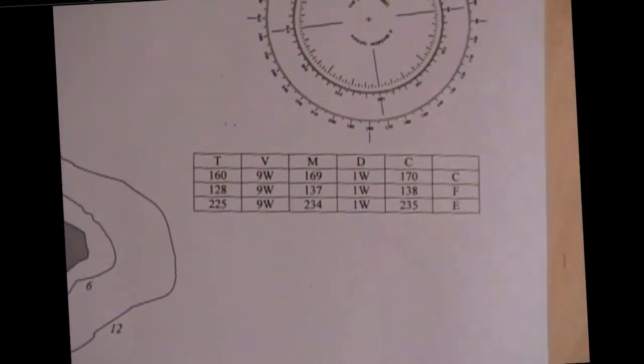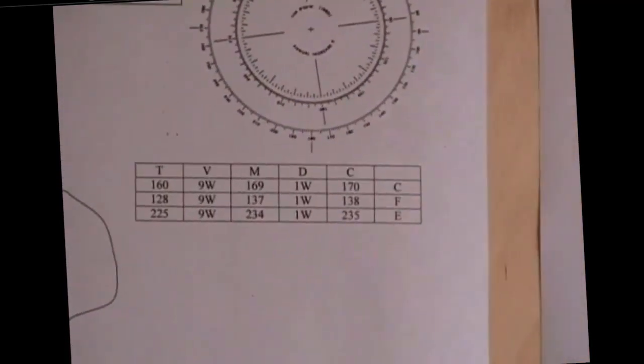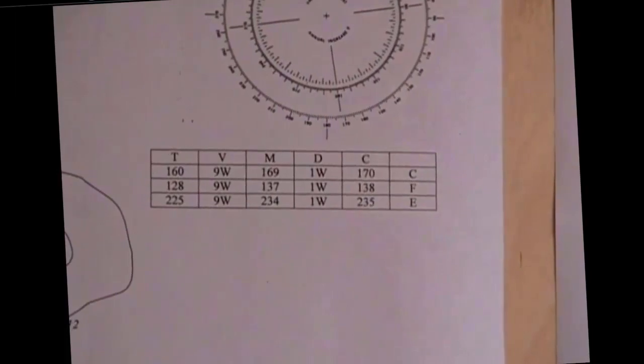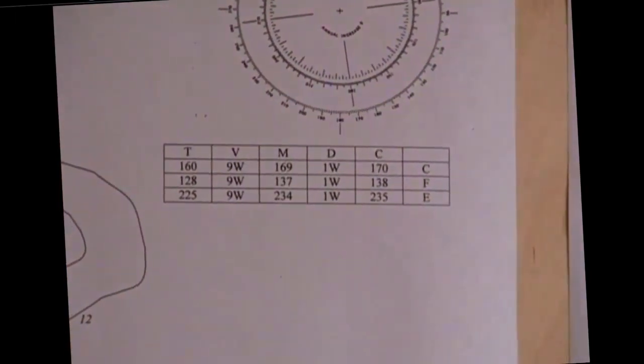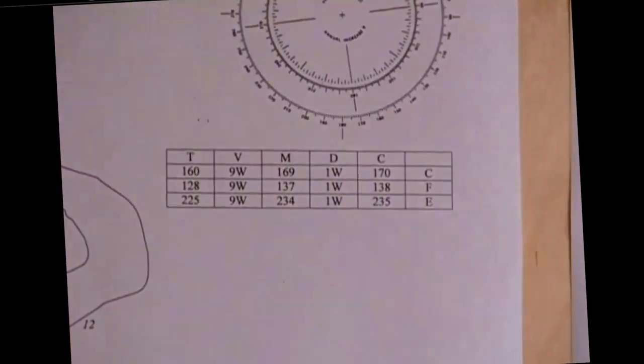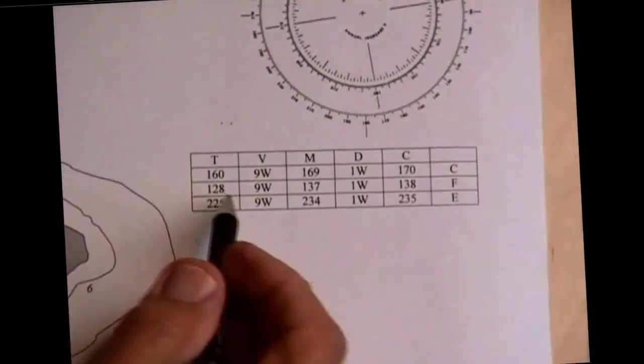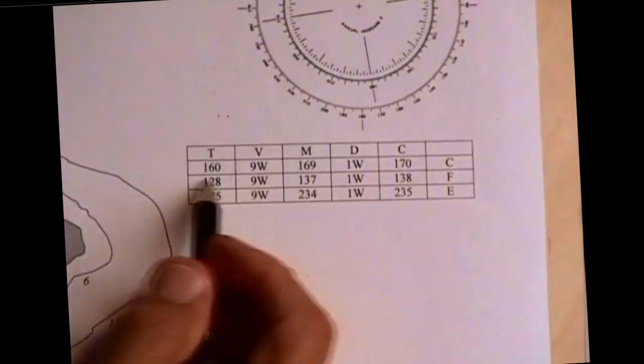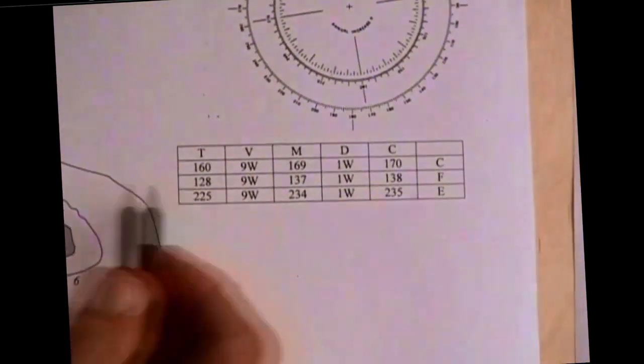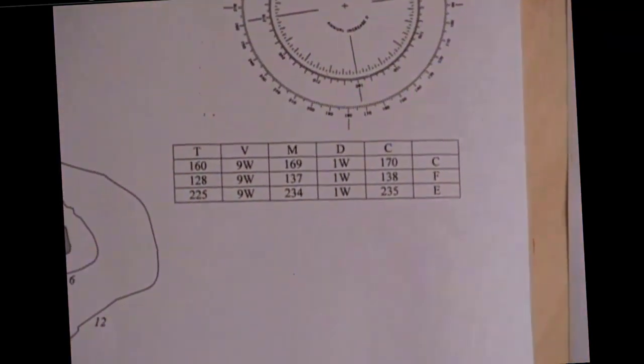As previously, we already calculated the variation for this location for the year 2002, and it was nine west, so we apply nine west to all of these. These are subtractions. So the true has become a course of 160 true, and here are the two bearings, 128 and 225.